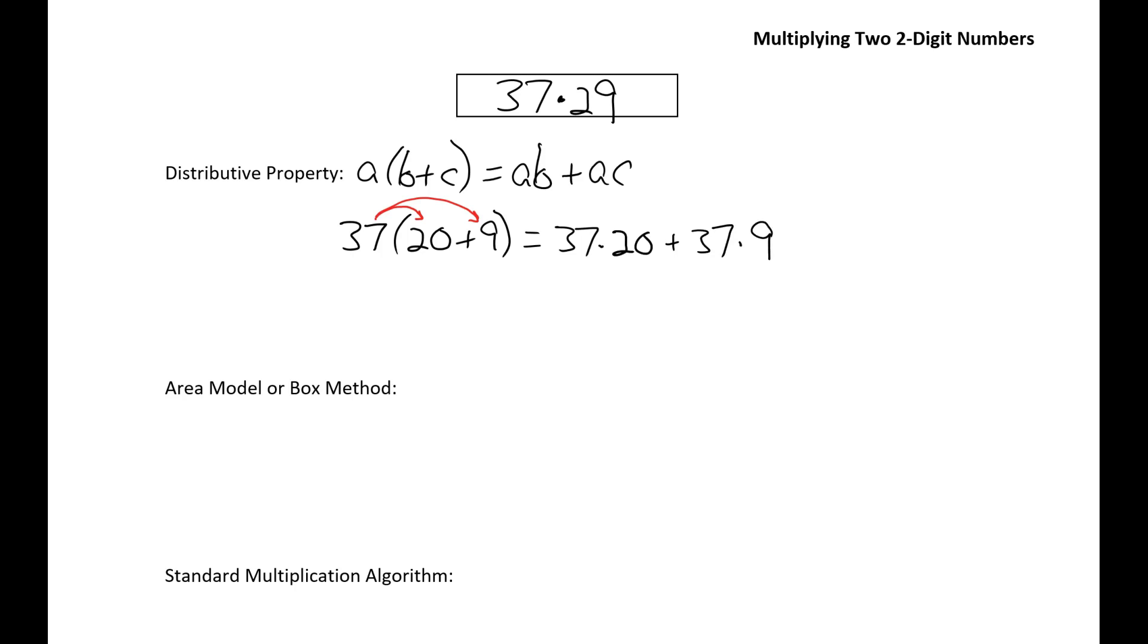But how about if, in addition to splitting up 29 into 20 plus 9, we also split up 37 into 30 plus 7, and we write our multiplication expression like this: 30 plus 7 times 20 plus 9. Well, it turns out we can use the distributive property on this expression as well, as long as we multiply each part of our first number times each part of our second number.